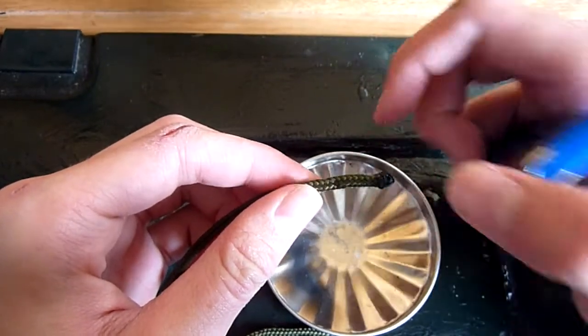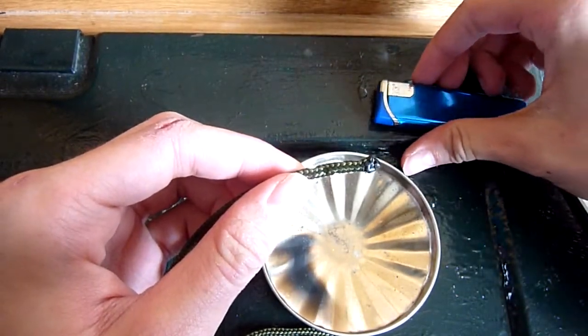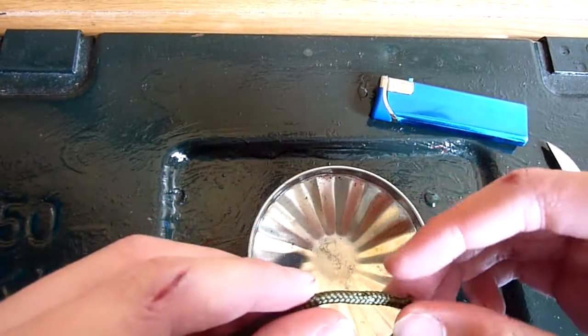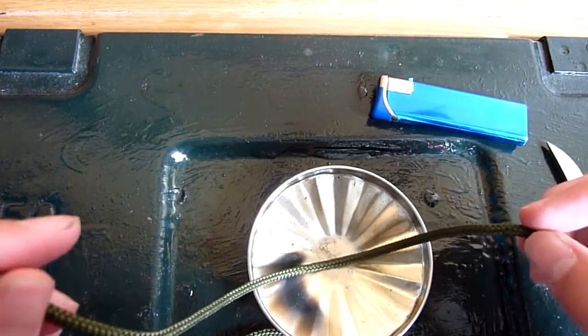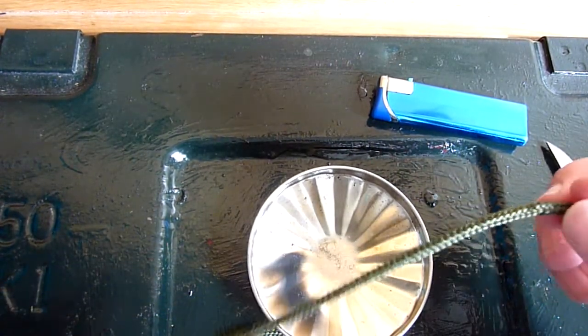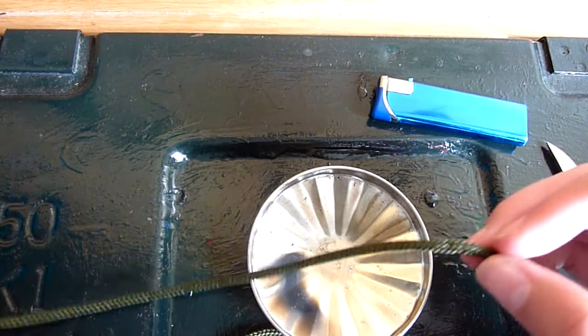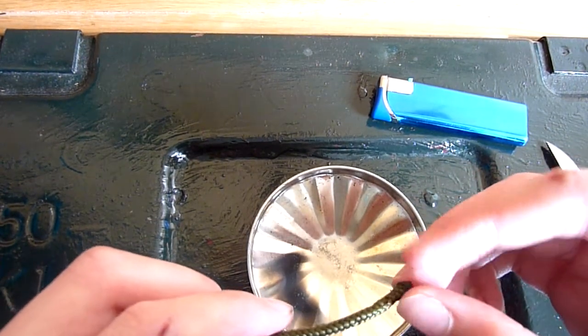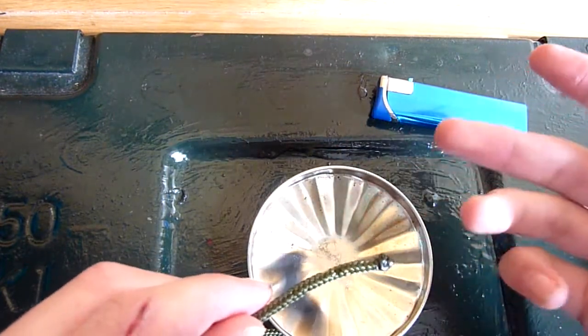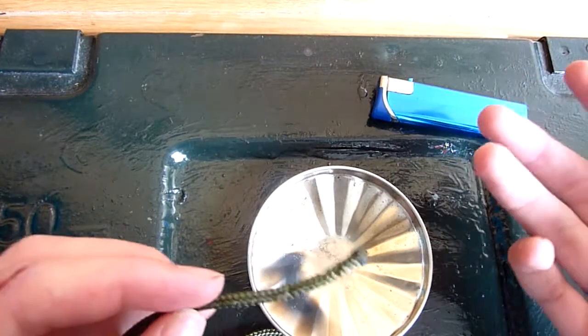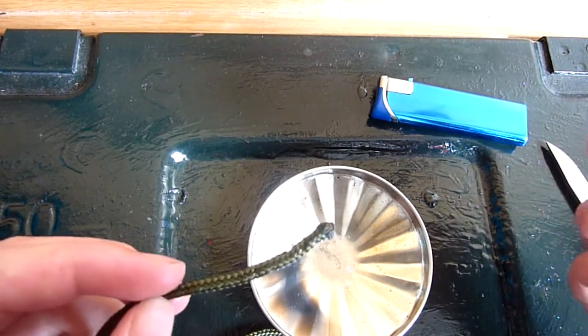This will stop it from fraying. It doesn't have to be a lighter, you can use any heat source, you know, candle, match, but it would probably be a waste of a match. The only heat source I wouldn't recommend using is a jet lighter, because it just burns up the rope. It doesn't quite work as well on more natural cordage, like garden twine. It can work, but most likely they'll just burn up, like a fuse or a wick.